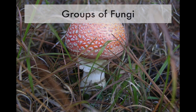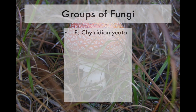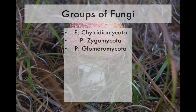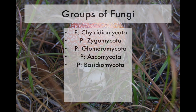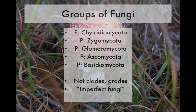As far as the groups of fungi, we have five phyla. Chytridiomycota is considered a phylum, although it's polyphyletic. We also have the Zygomycota, the Glomeromycota, the Ascomycota, and the Basidiomycota — all of which have the word root 'mycota,' meaning cap and referring to all things fungal. In addition, there are a couple of grades or polyphyletic groups, like imperfect fungi and lichenized fungi, and we'll discuss those further as we go on.